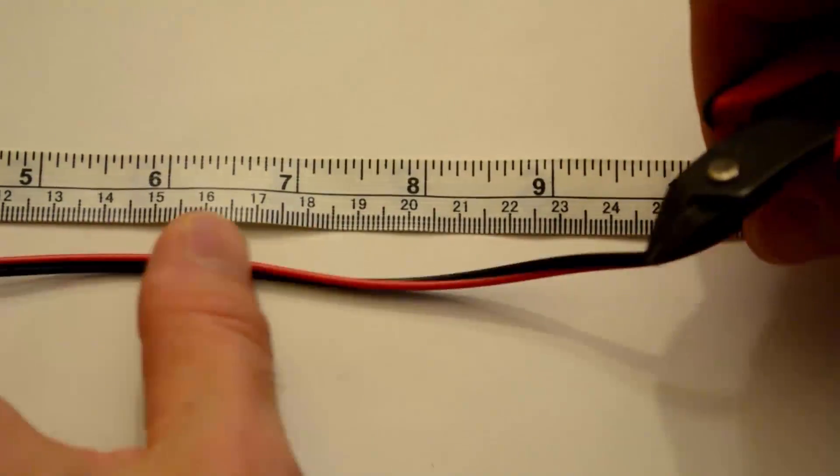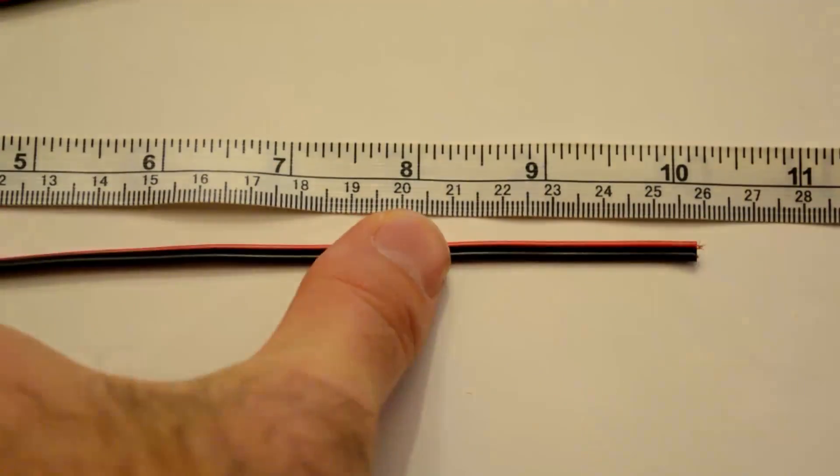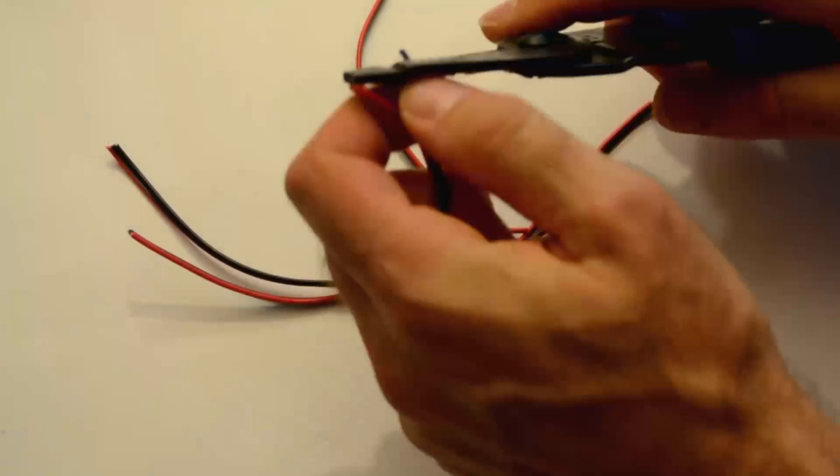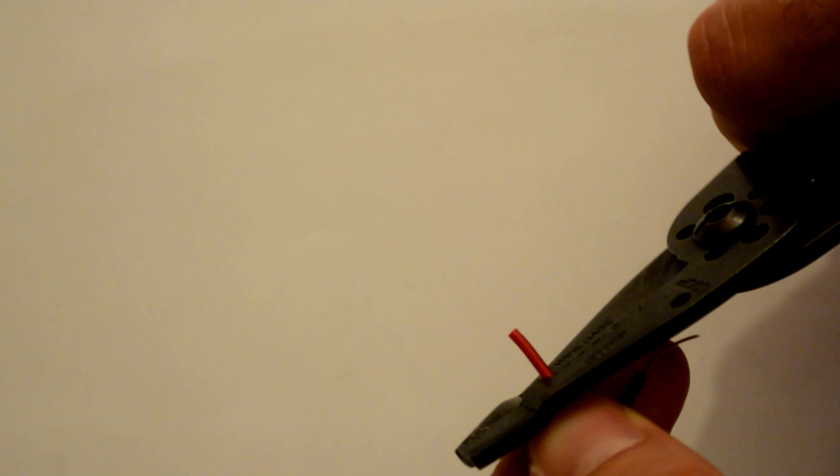I probably could have cut these shorter. In fact, I could have gotten down to like six inches would have been fine. Once you have the wires cut, you should pull apart the black wire from the red wire about half an inch down on each end, and then strip the wire to prepare for soldering. It's a 22-gauge wire, and that slot worked just perfect on the strippers.